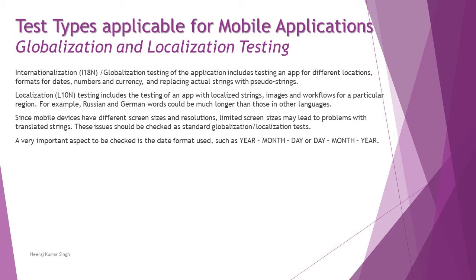Localization testing includes testing an app with localized strings, images, and workflows for a particular region. For example, Russian and German words could be much longer than those in other languages, so we need to ensure they fit within the same UI boxes. If targeting specific locales, make sure the content meets the criteria. Since mobile devices have different screen sizes and resolutions, limited screen sizes may lead to problems with translated strings. These issues should be checked as standard globalization or localization tests.